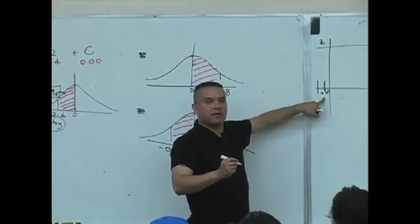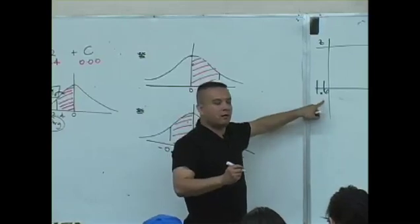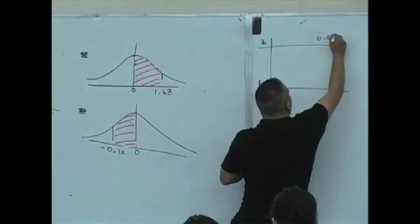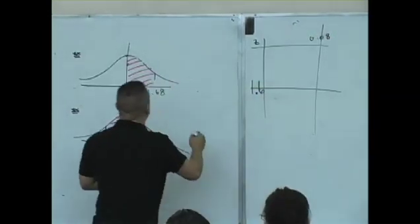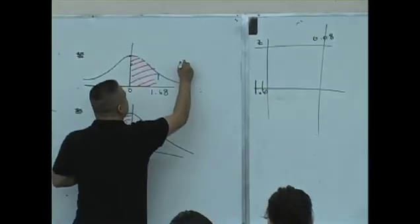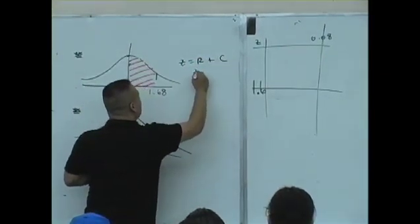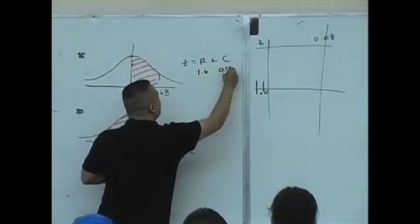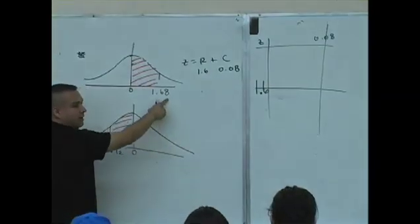Isn't that 1.6? What column do you look for now? 0.08. You fine-tune. So that Z-score: row plus column — 1.6 and 0.08. Isn't that 1.68?